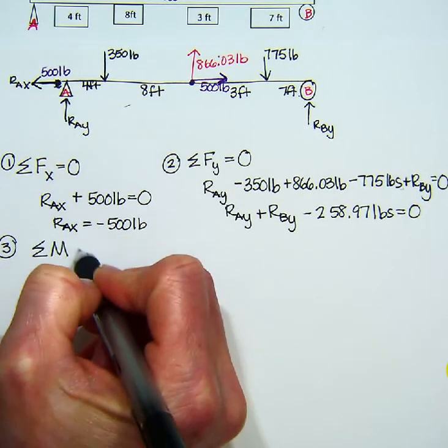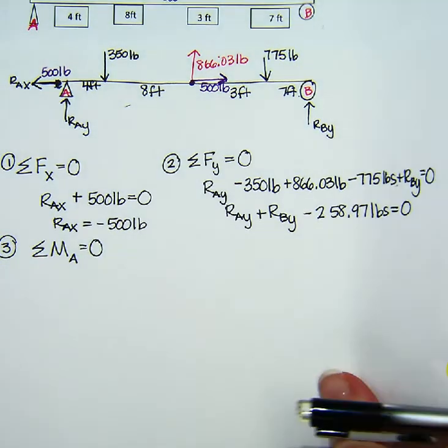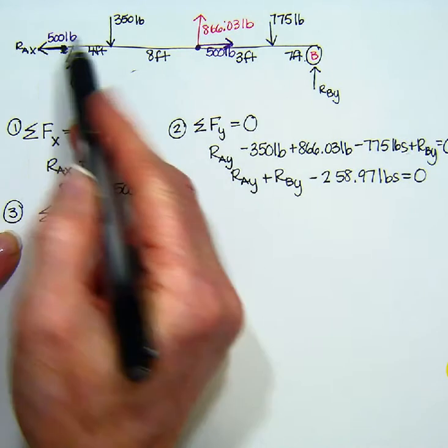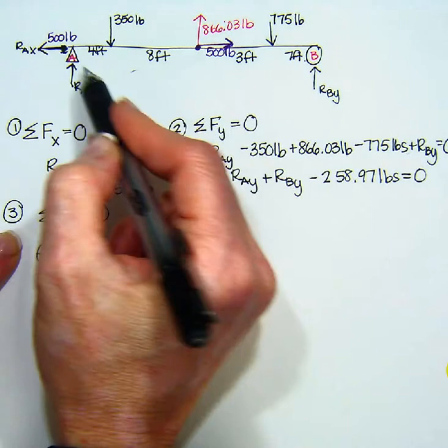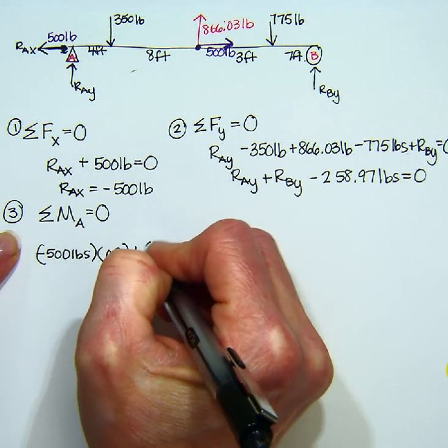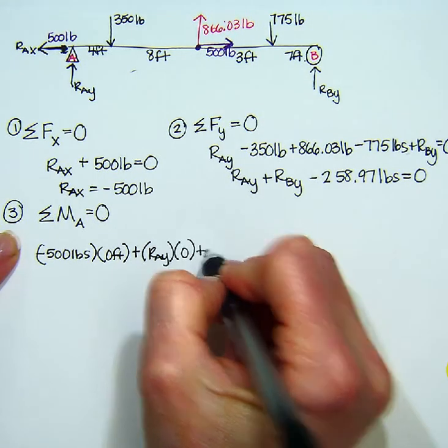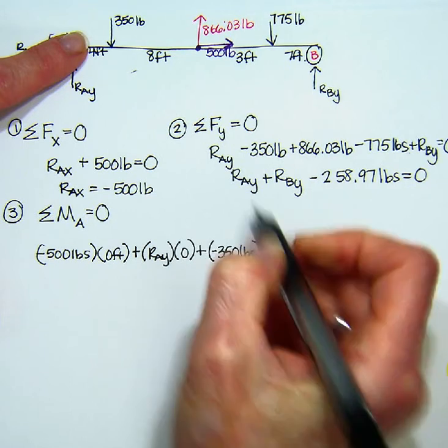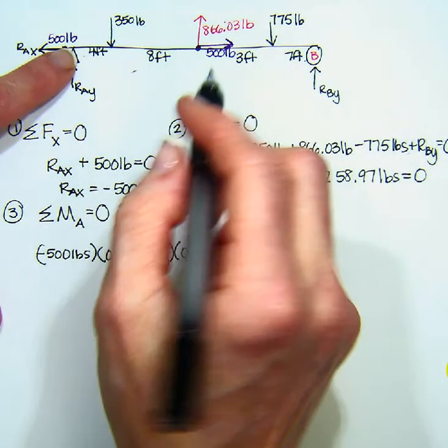The sum of the moments about my PIN, which is at A, have to equal zero. So I'm going to start writing my moments. So I'm going to have negative 500 for RAX. And it is how far away from A? It is zero. Plus RAY, and it is zero away from A. Plus negative 350 pounds. And how far away from A? It is four.